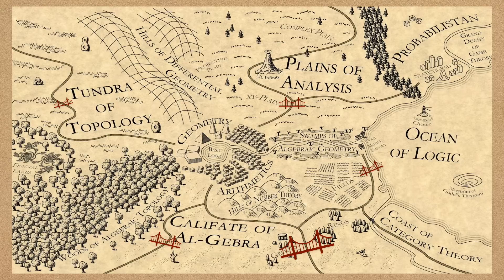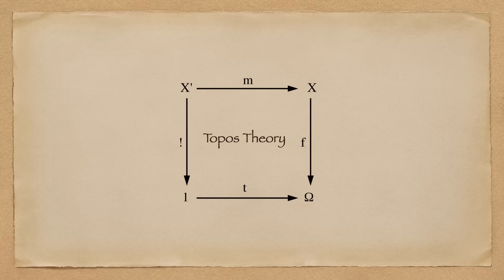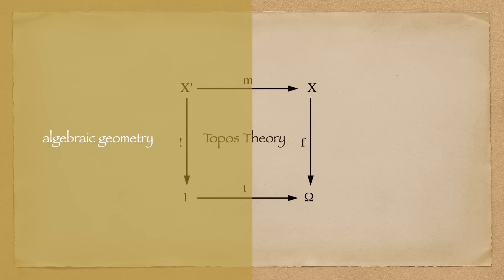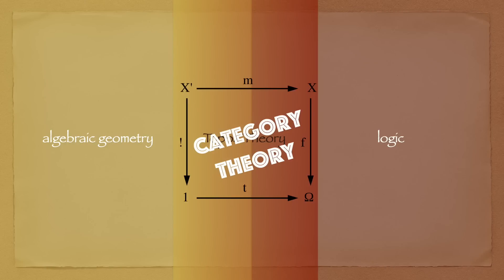Because of this nature, category theory is often regarded as the unifying language of math, sometimes called the mathematics of mathematics. For example, topple theory establishes a connection between algebraic geometry and logic, which uses an insane amount of category theory. And it makes sense, because generalization and abstraction is the bread and butter of mathematicians, so category theory arises naturally.